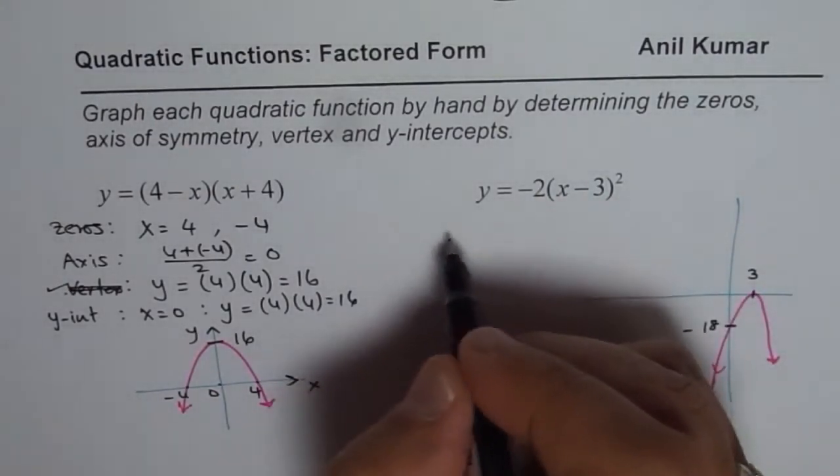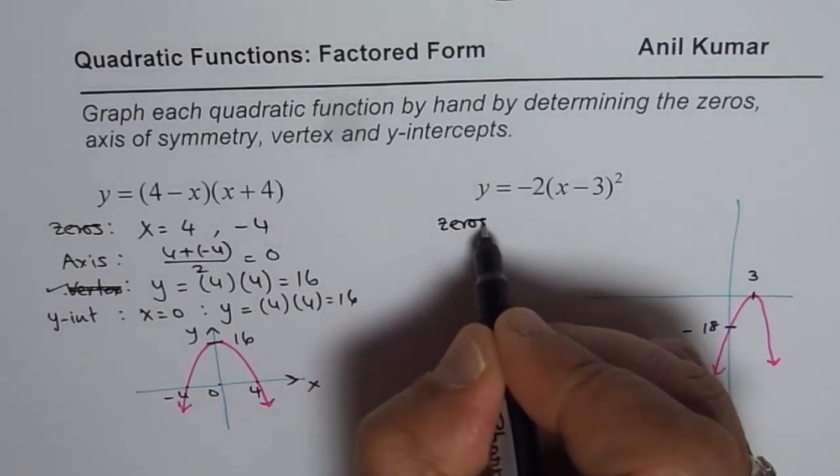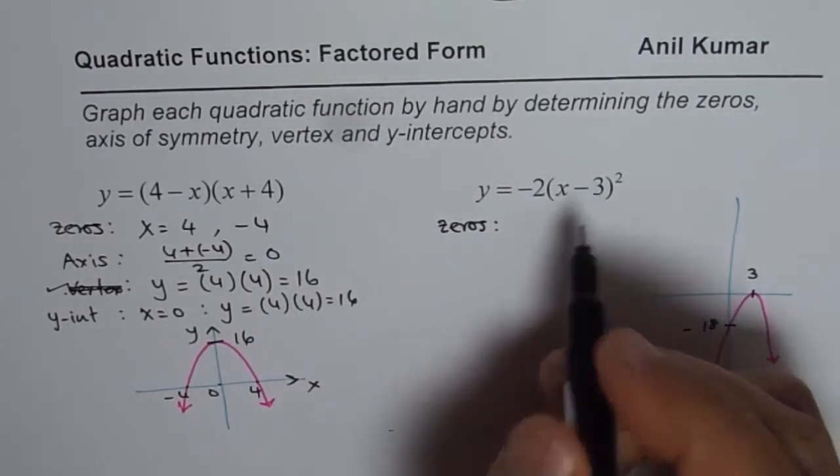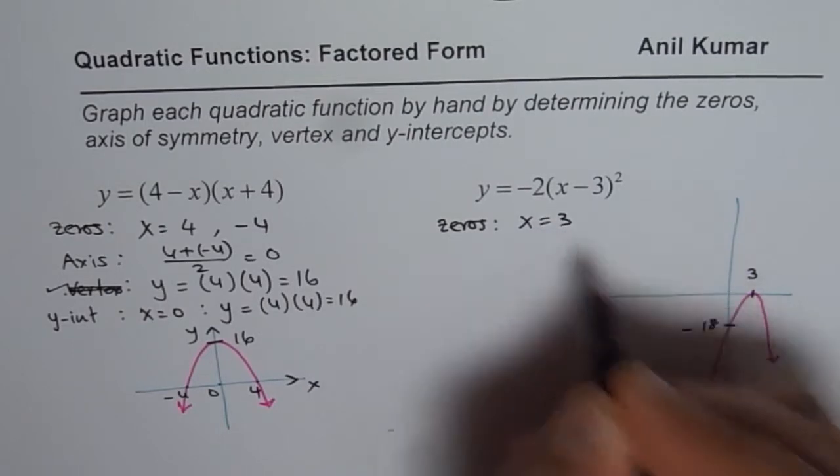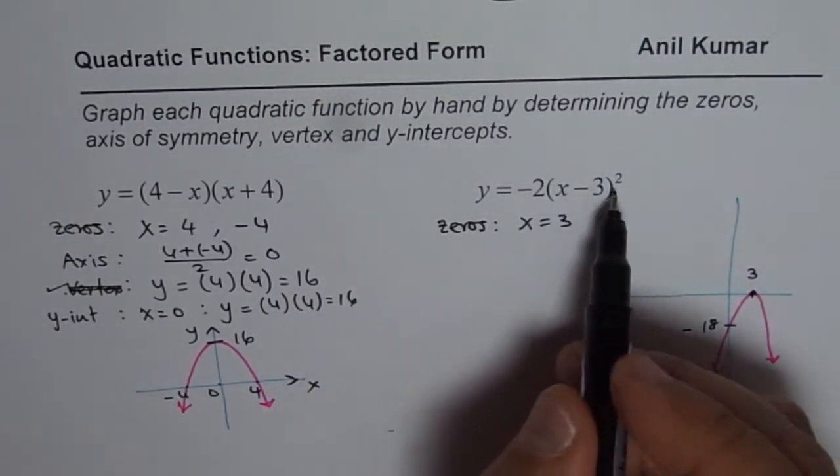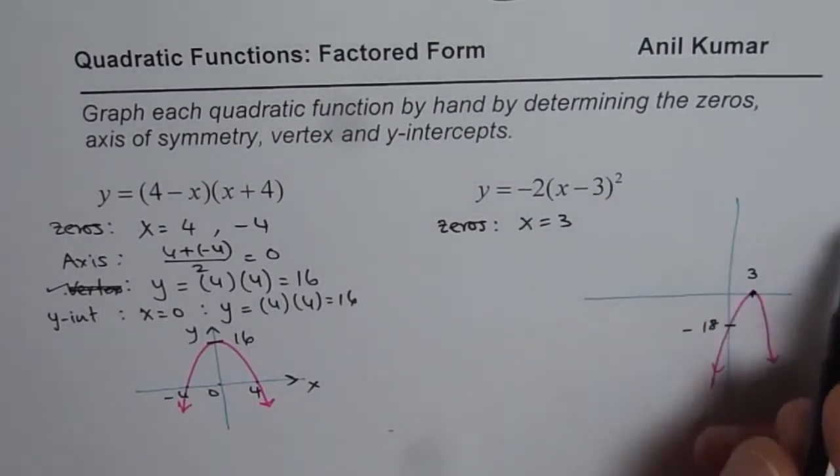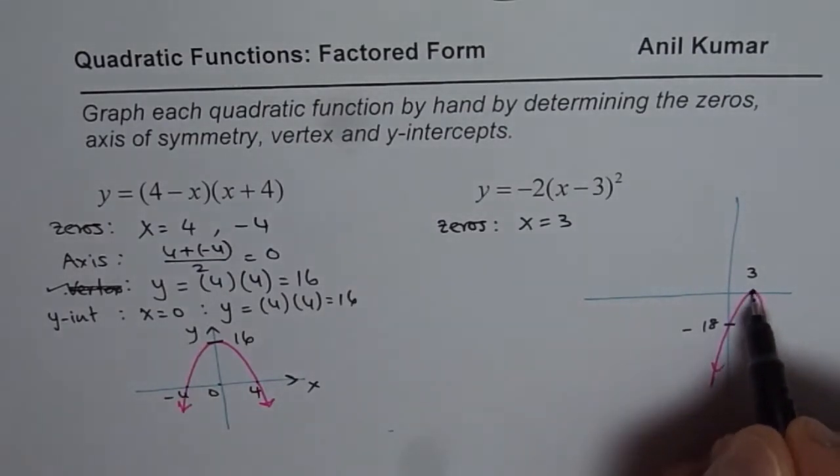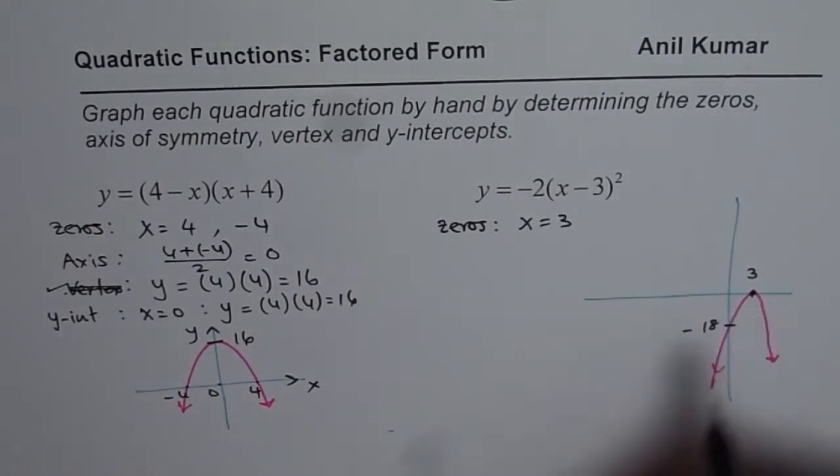We have zeros at, when will it be 0? When x equals 3. So at x equals 3. That is what we got here. Double 0, since it is square.